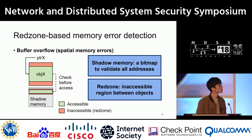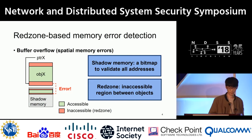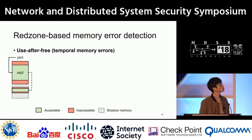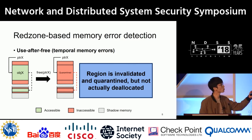To detect spatial memory errors, all objects exist between red zones, which are inaccessible regions. Access to the red zone can be detected since the corresponding shadow memory is invalid. The redzone-based approach also detects temporal memory errors like use-after-free by using a quarantine zone to hold an object for a while before deallocating it. When an application requests to free an object, the region is invalidated and quarantined but not actually deallocated, so access can be detected since the corresponding shadow memory is invalid.